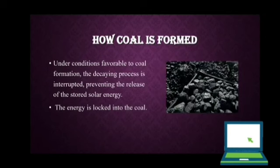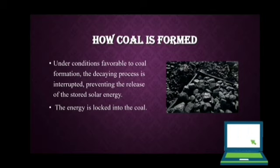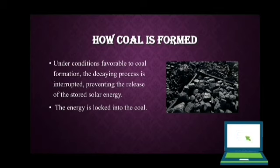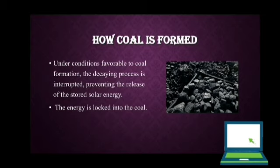Let's get to know how coal is actually formed. The energy we get from coal today comes from the energy that plants absorbed from the sun millions of years ago. All living plants store solar energy through photosynthesis. When plants die, this energy is usually released as they decay. Under conditions favourable to coal formation, the decaying process is interrupted, preventing the release of stored solar energy. That energy is locked into the coal. The burial of plant materials was subjected to high temperature and pressure, causing physical and chemical changes that transformed vegetation into coal.